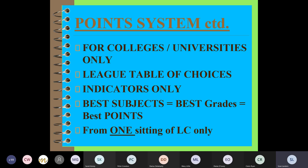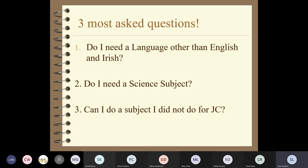Points can fluctuate because it's a league table of choices. A number of years ago, crime scene investigation programs were very popular on television, and for a couple of years forensic science courses were very high on the points tables. Your best subjects and best grades will give you your best points - if you're good at something, you'll probably do well at it and pull out good results.